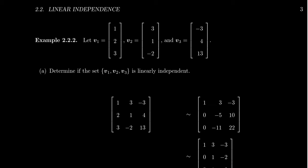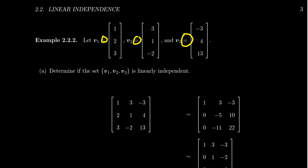Remember, linearly independent means we're considering the following problem: can we find coefficients c1, c2, and c3 such that combining the vectors gives the zero vector? There's always one way of doing that — we can just set the scalars to 0, 0, 0, which gives the zero vector, but that's trivial. Can we find a non-trivial way of producing the zero vector? If we can't, the vectors are linearly independent. If there is a non-trivial way, the vectors are linearly dependent.